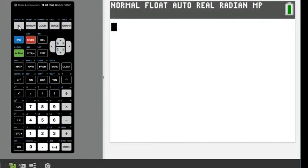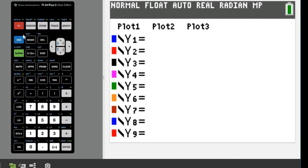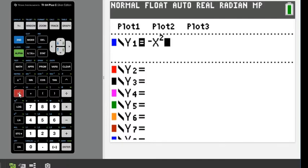So what you're going to do is hit the y equals screen, and I have the equation written down, so I'm going to type negative x squared—remember that you have to use the x, t, theta, n button—minus 3, and that would be my first one.